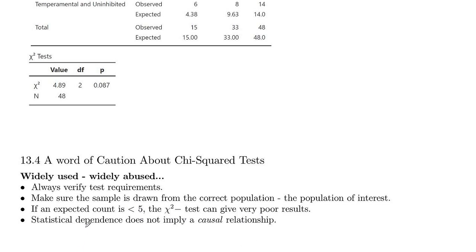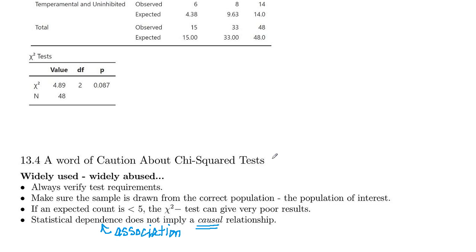Statistical dependence, remember, does not imply a causal relationship. Dependence here is association, and association is not the same as causation. Correlation does not imply cause and effect.